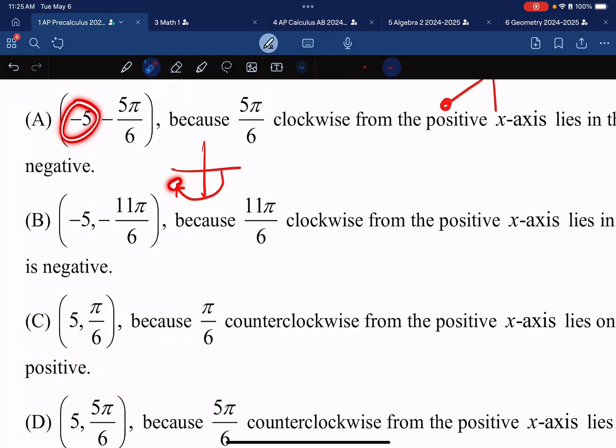And because I have a negative, instead of graphing a point over here, I'm going to do 180 degree rotation and instead graph the point on the other side. Notice that this point is not the same as the point that we were looking for. So A is not correct.